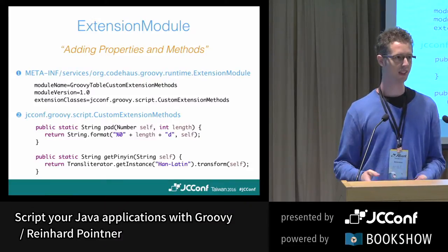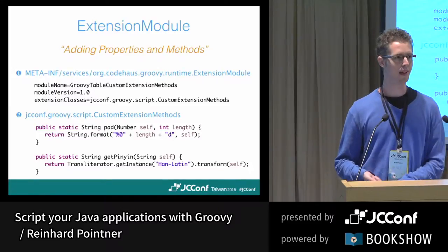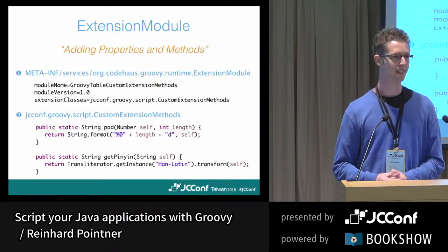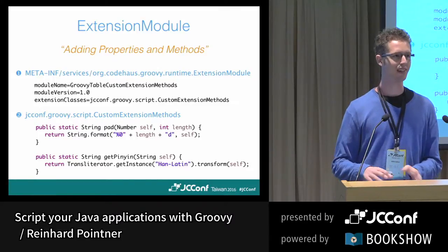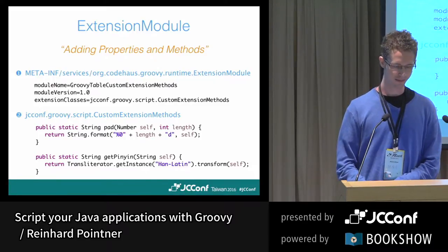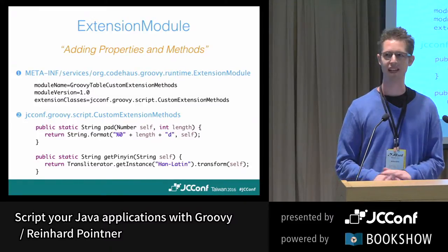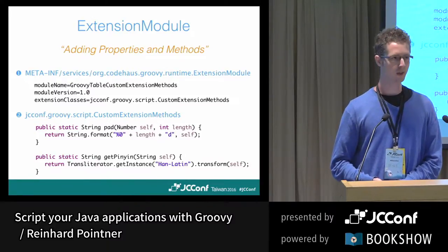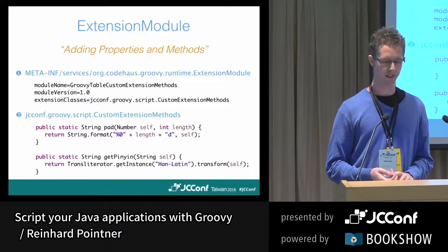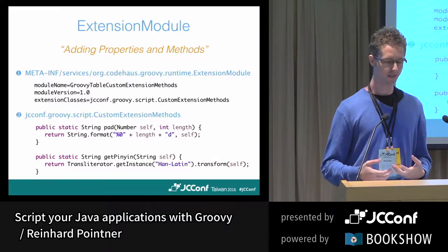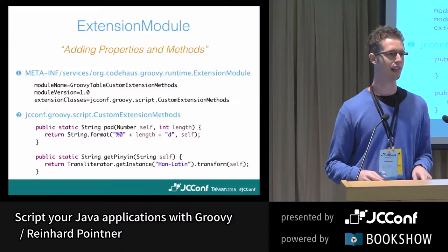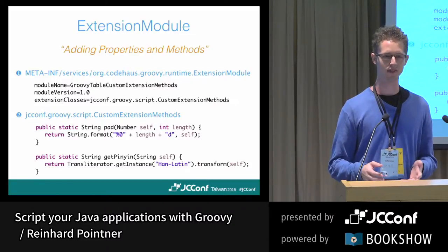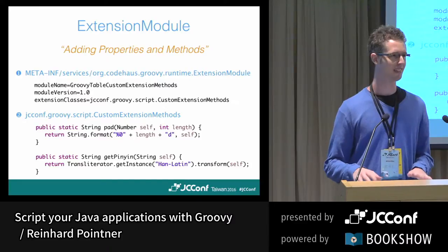For example, the 'pad' function is just a normal function — it takes one argument, length — but Groovy will automatically pass 'self', the 'this', the number object. And for 'pinion', when we use it, we can just write 'pinion' because Groovy will automatically change the Java getter method to a Groovy property. Because the extension module is loaded via the Java ServiceLoader, if you write your own extension module and build a jar, you can add it to the classpath and any other program will magically know about your Groovy extensions.